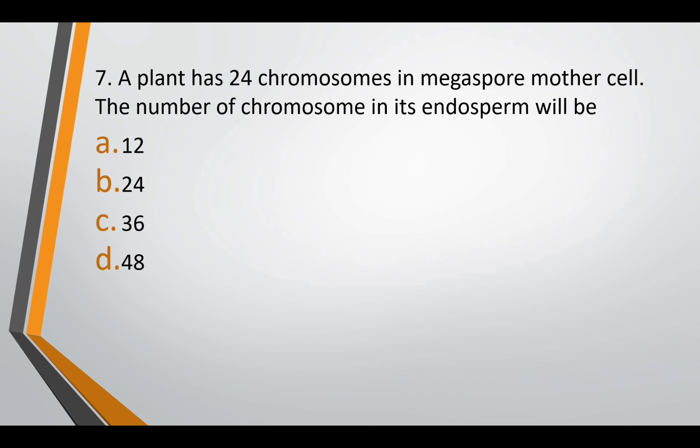Question seven: a plant has 24 chromosomes in megaspore mother cell. The number of chromosomes in its endosperm will be — option A: 12, option B: 24, option C: 36, or option D: 48. The correct answer is option C — 36. The 24 chromosomes in megaspore mother cell represents the 2N state. When meiosis takes place, each nucleus would have N, that is 12 chromosomes. Endosperm after fertilization has 3N chromosomes, so 3 × 12 = 36.